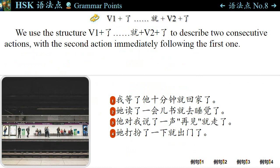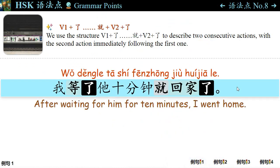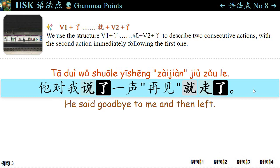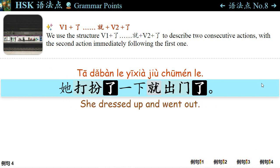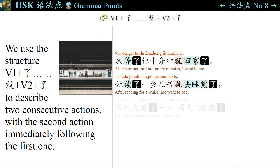语法点八: We use the structure verb plus 了 with 就 and a second verb plus 了 to describe two consecutive actions, with the second action following the first. 例句一: 我等了他十分钟就回家了。 After waiting for him for ten minutes, I went home. 例句二: 他读了一会儿书就去睡觉了。 After reading for a while, he went to bed. 例句三: 他对我说了一声再见就走了。 He said goodbye to me and then left. 例句四: 他打扮了一下就出门了。 He dressed up and went out. Structure: verb one plus 了 and 就 with verb two plus 了。